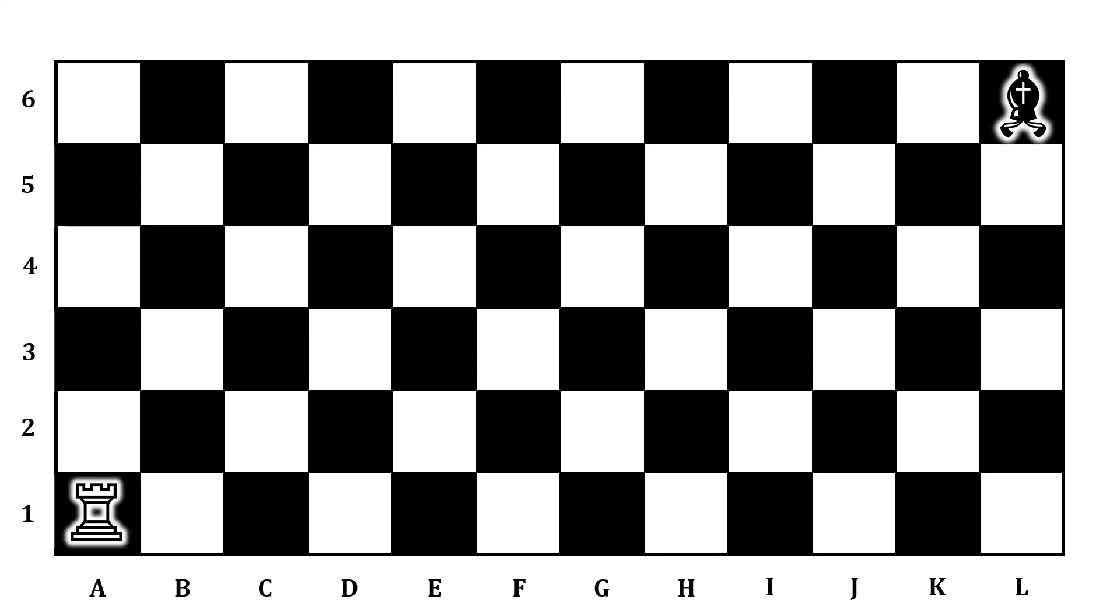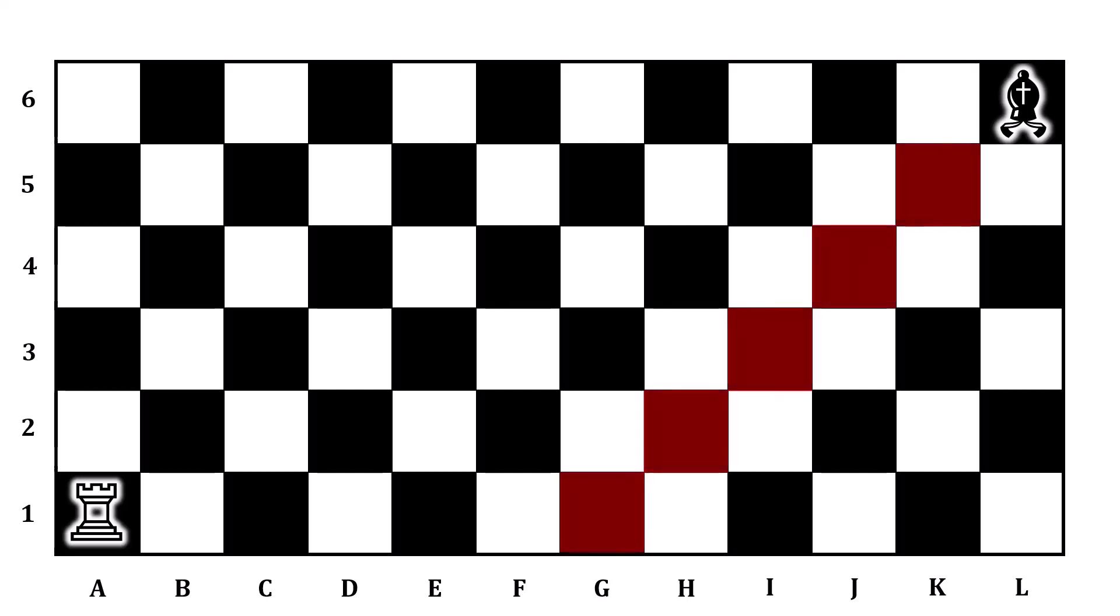The first step in solving this game is realizing that you can't place the rook anywhere on the diagonal leading from the bishop. If you do that, the bishop captures the rook and you immediately lose.